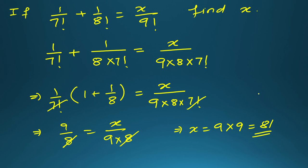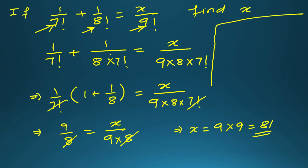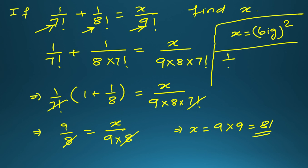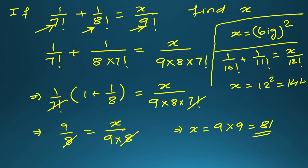There is also a shortcut — not for CBSE board exams, but useful in competitive exams with MCQs. If the three factorial numbers are consecutive (like 7, 8, 9) and x is with the biggest number, then x equals the biggest number squared. For example, 1/10! + 1/11! = x/12! gives x = 12² = 144. You can verify this using the full method.